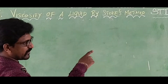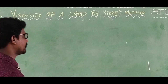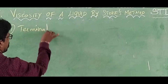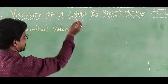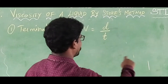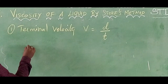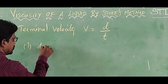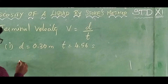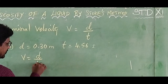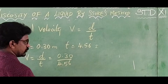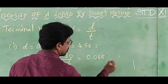By knowing the distance traveled by the spherical ball in meters and time taken in seconds, we are going to determine the terminal velocity. The terminal velocity v is determined by the formula: v equals distance divided by time. For the first reading, the distance traveled is 0.30 meters and the time taken is 4.56 seconds. So the terminal velocity v₁ equals 0.30 divided by 4.56, which equals 0.065 meters per second.